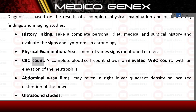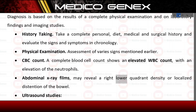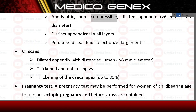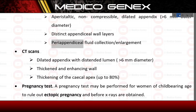CBC count: a complete blood cell count shows an elevated WBC count with an elevation of the neutrophils. Abdominal X-ray films may reveal a right lower quadrant density or localized distension of the bowel. Ultrasound studies: a peristaltic, non-compressible, dilated appendix with 6 mm outer diameter; distinct appendiceal wall layers; and peri-appendiceal fluid collection enlargement.